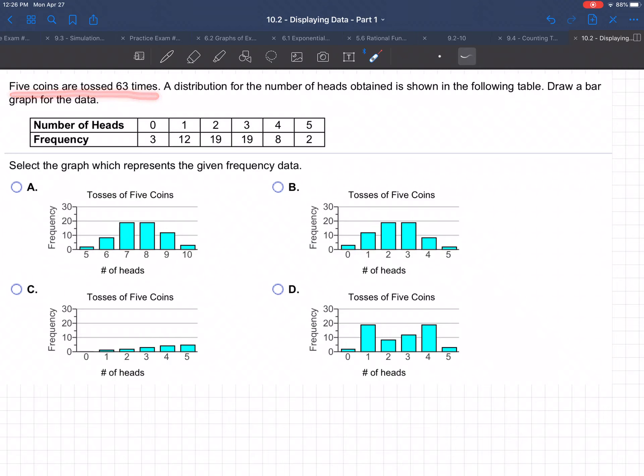Five coins are tossed 63 times. A distribution for the number of heads obtained is shown in the following table. Draw a bar graph.